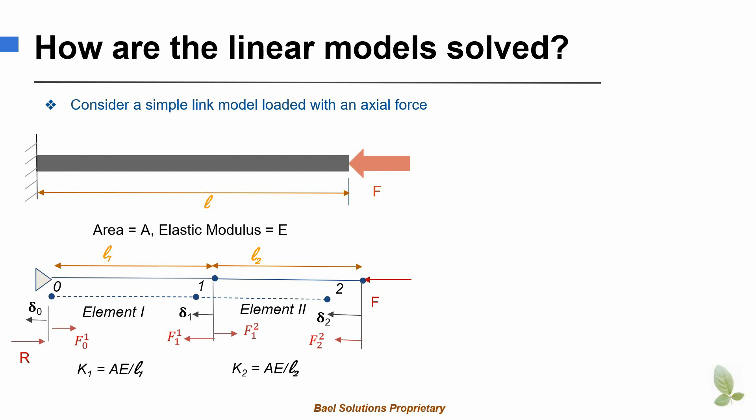Let us assume that the length of the first link element is L1, and the length of the second link element is L2. The deformed elements under the axial load are shown by the dotted line in the figure.